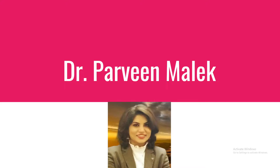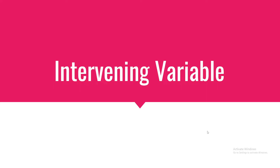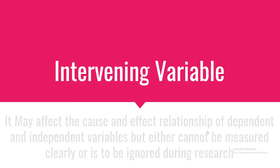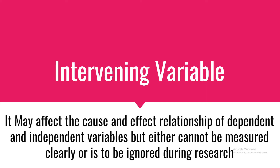Hello, I am Dr. Parveen Malek and today I am going to focus on intervening variable. What is intervening variable? Any such variable is called an intervening variable which can affect the cause and effect relationship of dependent and independent variables but either cannot be measured or must be ignored during research.